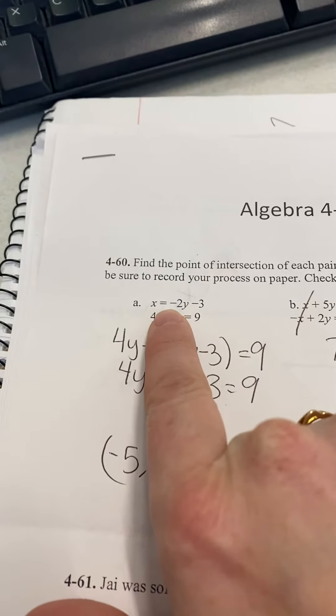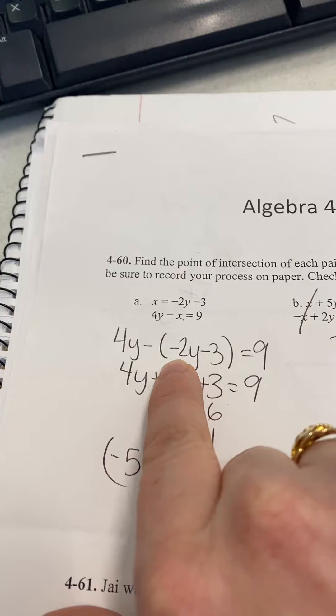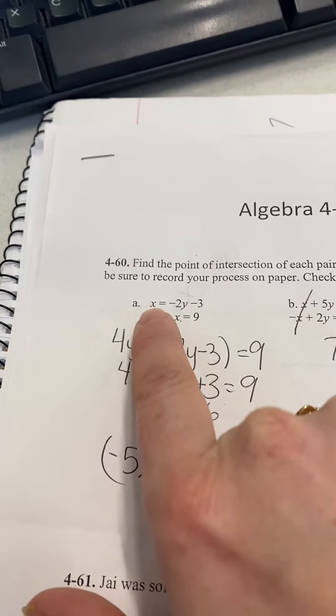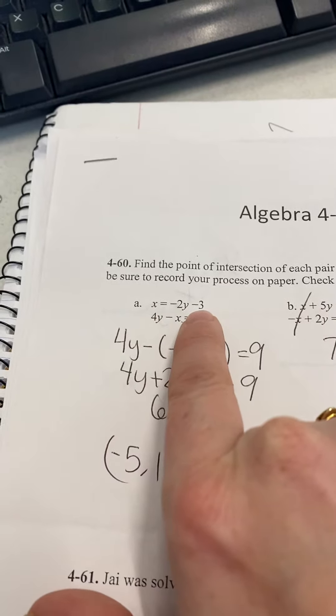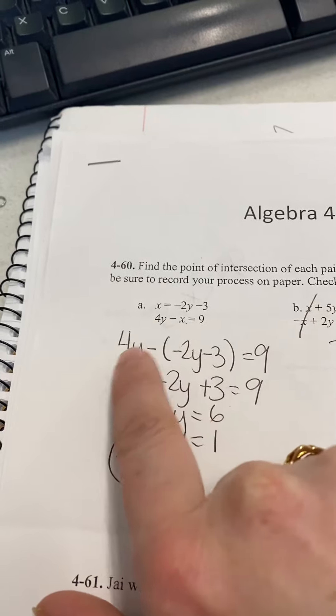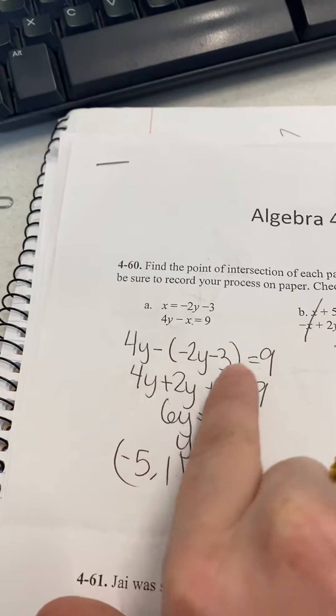Since x is by itself, to me it is easier to do substitution. So whenever you see x, you'll plug in negative 2y minus 3. You would have 4y minus, and in parentheses you'll put negative 2y minus 3, equals 9.